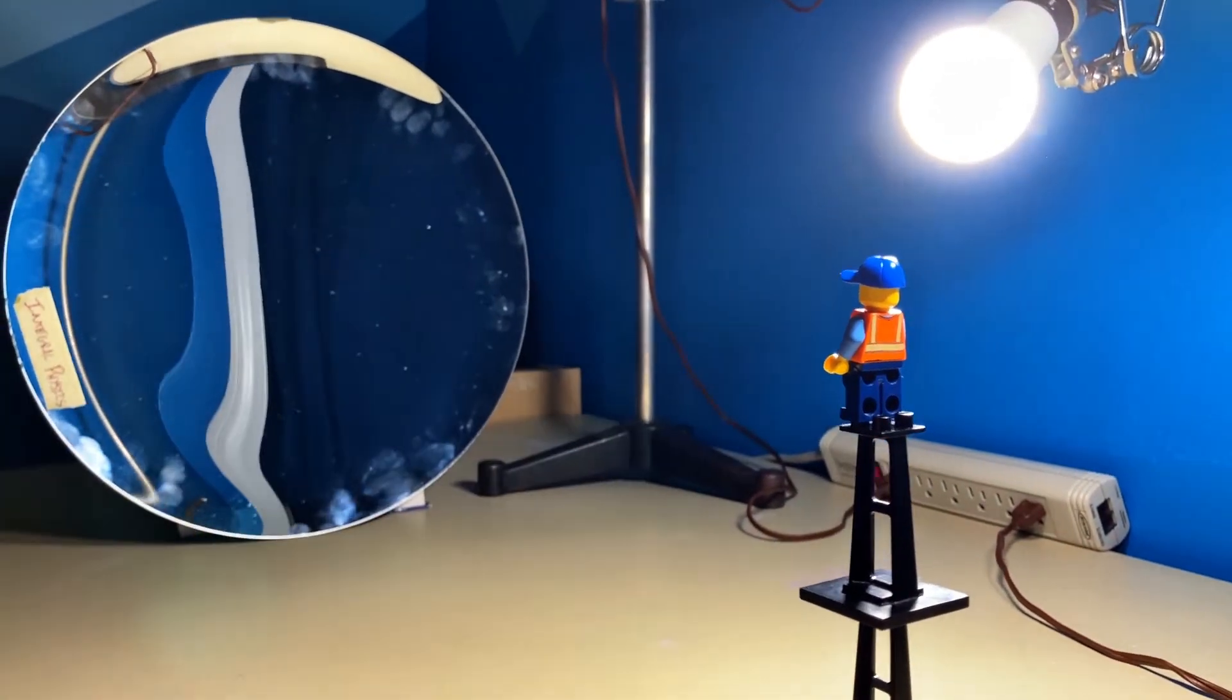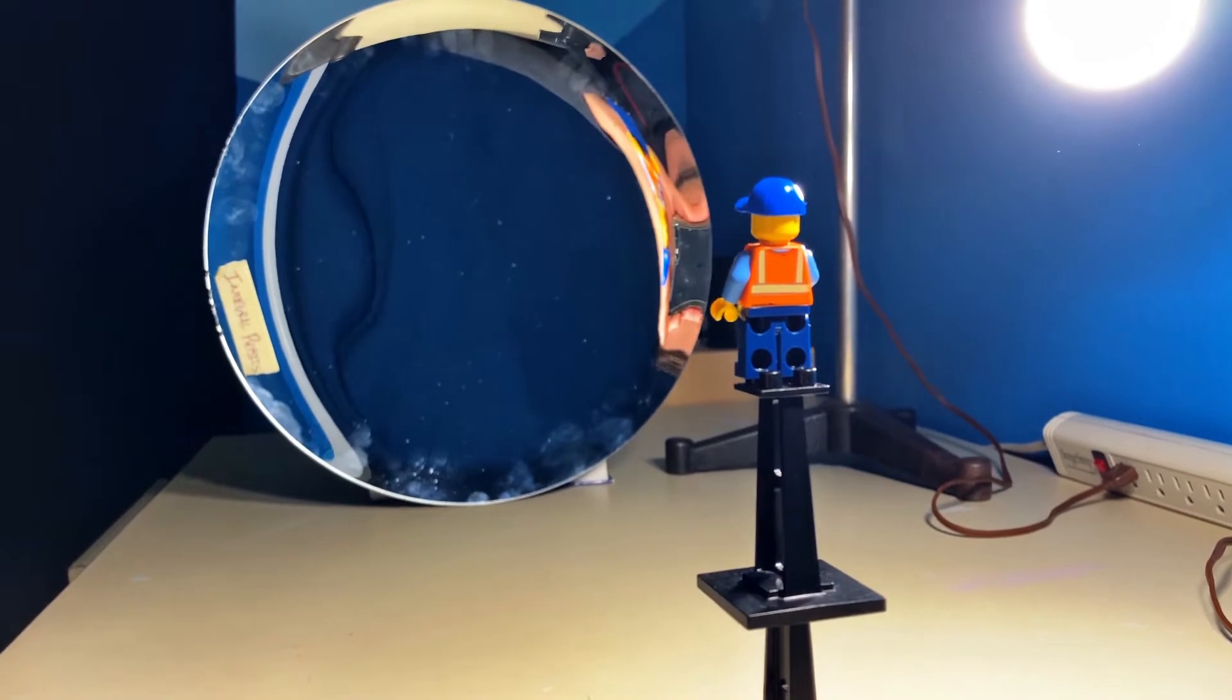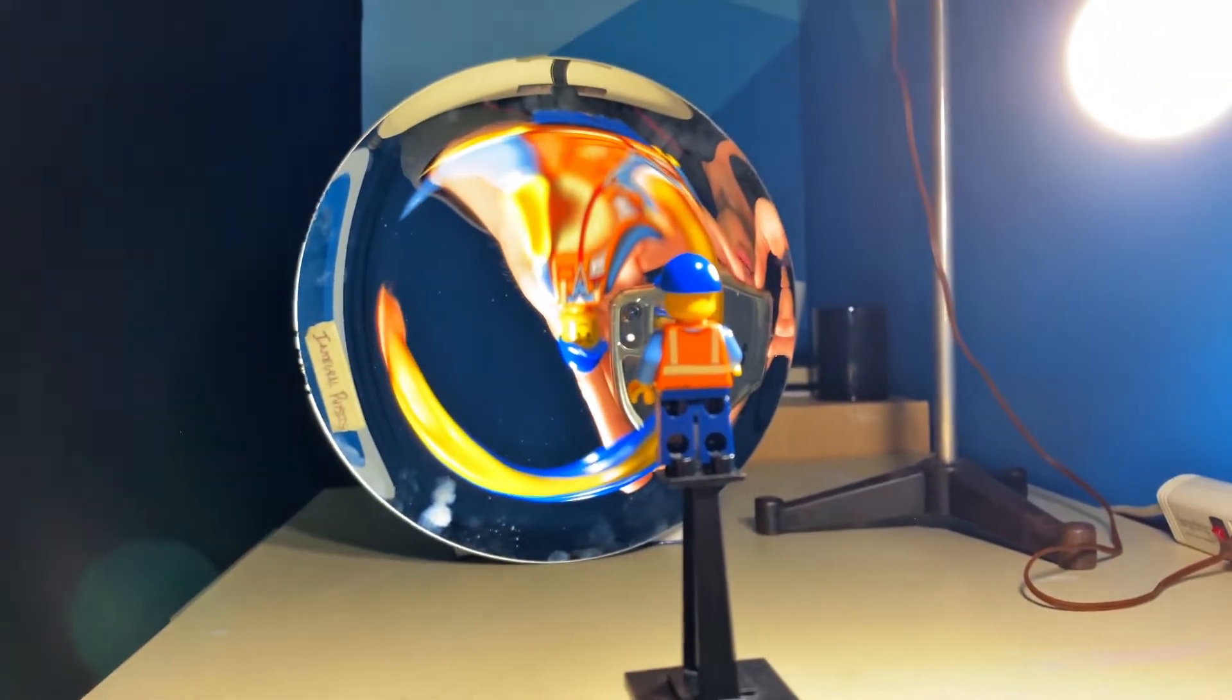And the reason is you have to be in the line. Really, you have to have the mirror between you, the observer, and the image.